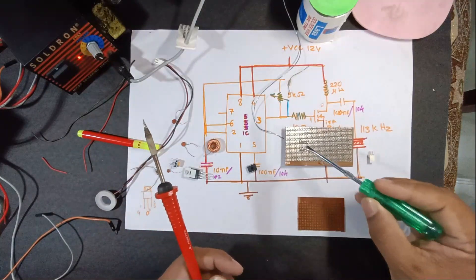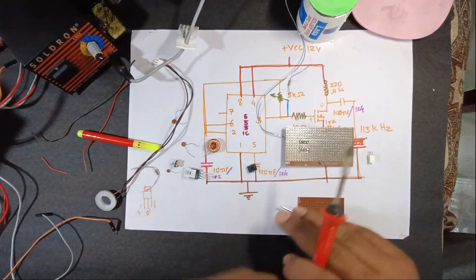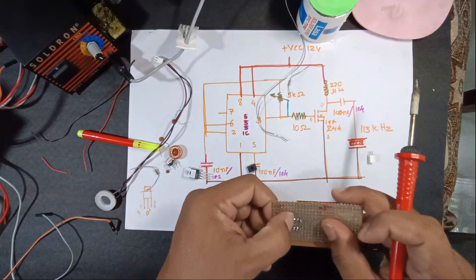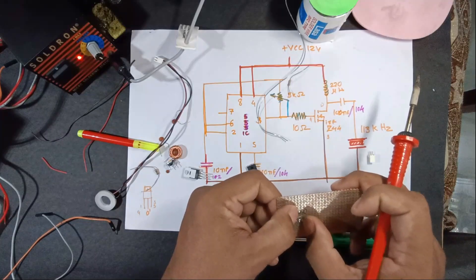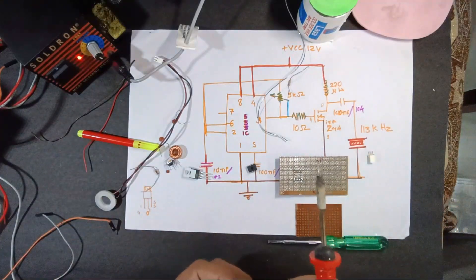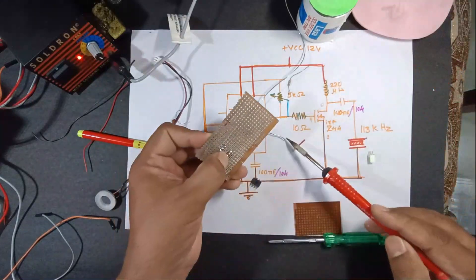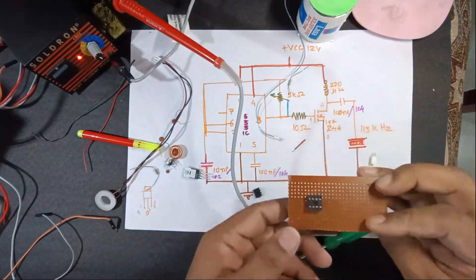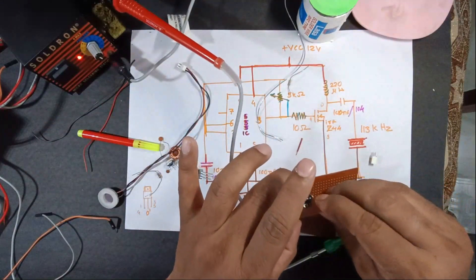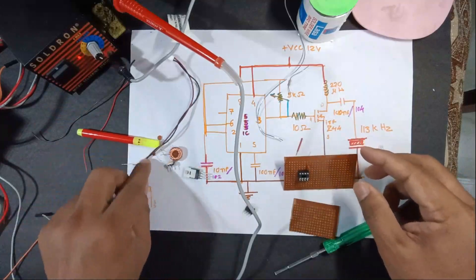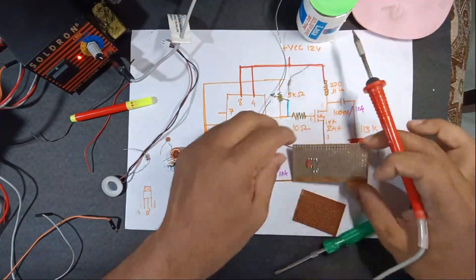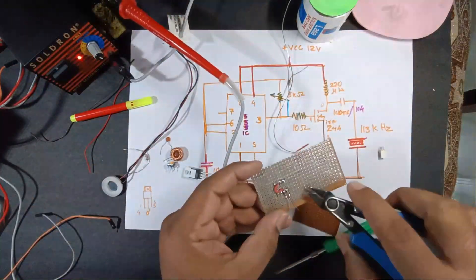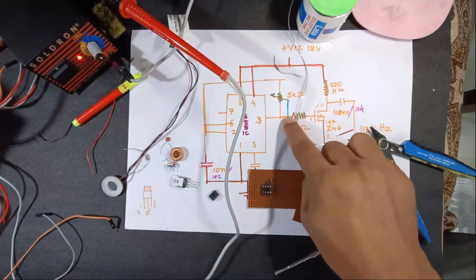So here pin number eight and four are shorted together. Now next, pin number two and six is going to be shorted together. So this is pin number two, this is three, four, five, six. Six and two should be shorted together. Now we require one pot.